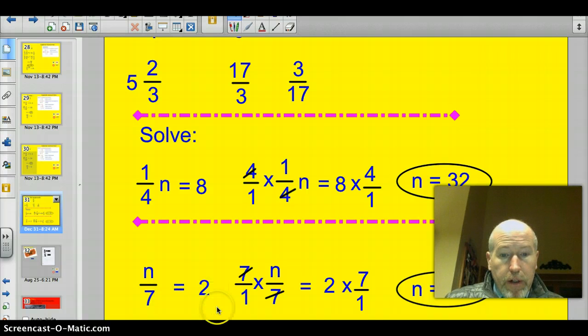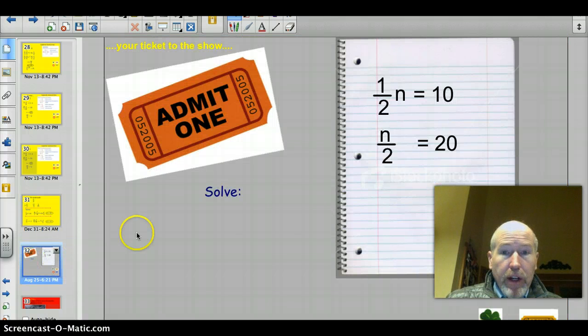Go ahead here. This one. We had n/7, so we really have to multiply it by 7/1, because this is like 1/7. So, 7s cross off, leaving us just plain old n on this side. 2 times 7 is 14/1. It's 14. Substitute that back in. 14/7 does equal 2. You can see the answers. Here's your ticket to the show. Go ahead and try solving these two for tomorrow.